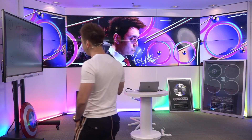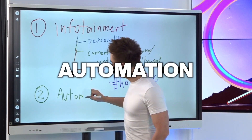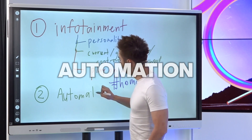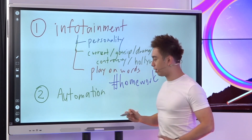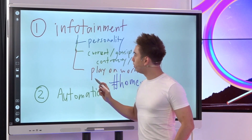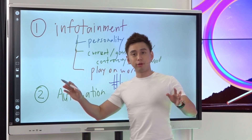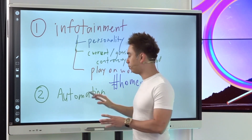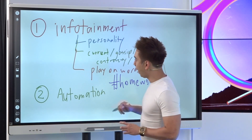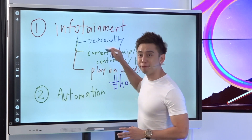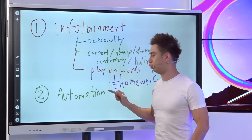Number two, first of all, is automation. Now I'm trying to link all three things together. So in order for me to teach automation, notice what I'm doing right now — in order to teach automation, I'm using infotainment.